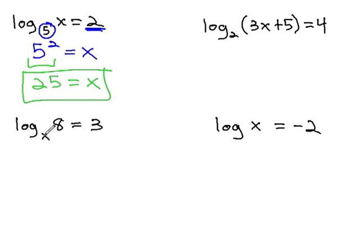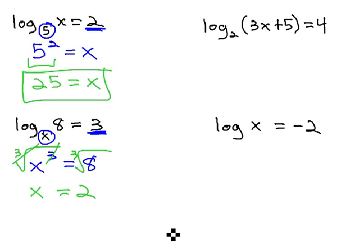The one below it is similar and just as easy: log base x of 8 equals 3. We might not know what base to put in here, but if we convert it to an exponent where the base of the log is the base of the exponential and the log equals the exponent, we get x cubed equals 8. The opposite of cubing is to take the cube root of both sides. Since cube and cube root are inverses, we're left with x equals the cube root of 8, which is 2.